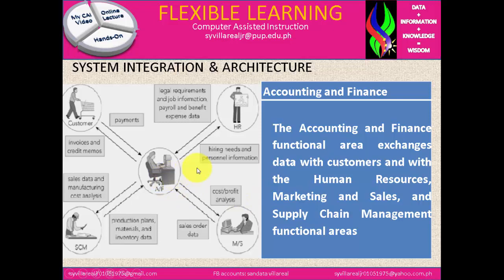The same process goes directly to HR, SCM, customer, and Finance. The accounting and finance functional area exchanges data with customers and with the human resources, marketing and sales, and supply chain management functional areas.